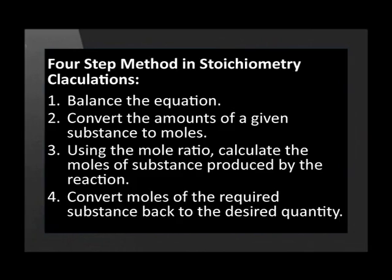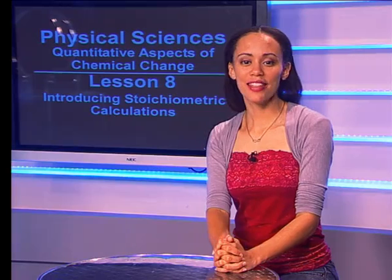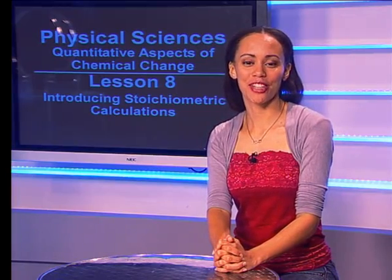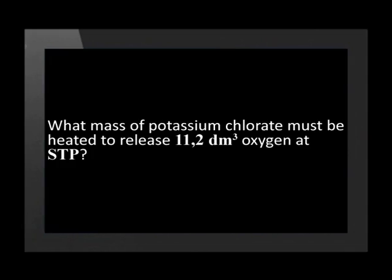And the final step is to convert the produced moles to the required amount asked in the calculation. This can be mass or volume, concentration or number of particles. Let's do one quick example before we end off this lesson. What mass of potassium chlorate must be heated to release 11.2 decimeter cubed of oxygen at STP?